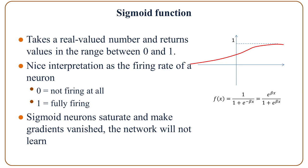Sigmoid neurons saturate and make gradients vanish, so the network will not learn. When the neuron's activations are 0 or 1, it saturates the gradient — the gradient in that region is almost 0 and almost no signal flows through the weights. If the initial weights are too large, then most neurons would saturate.